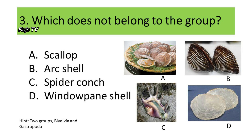These organisms are either gastropods or bivalves. If your answer is Spider Conch, you are correct. Spider Conch is a gastropod or univalve, while the scallop, arc shell, and windowpane shells are bivalves.